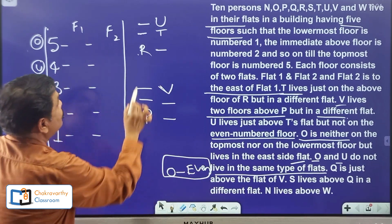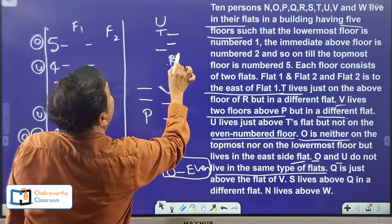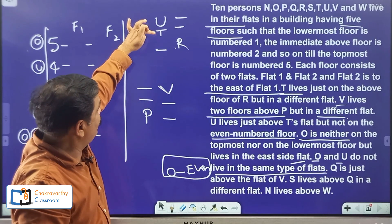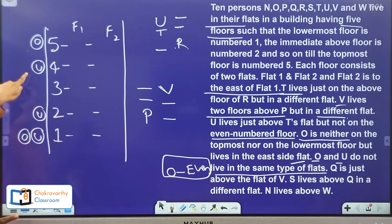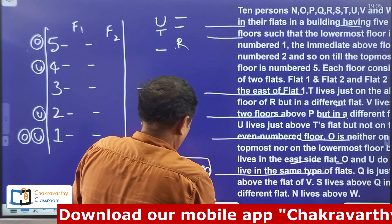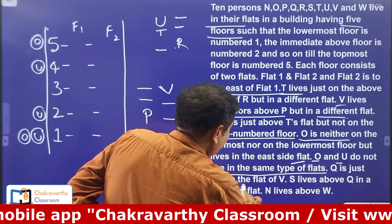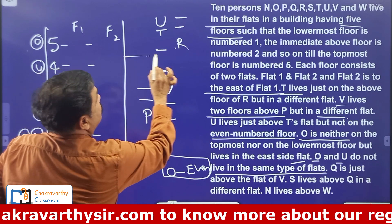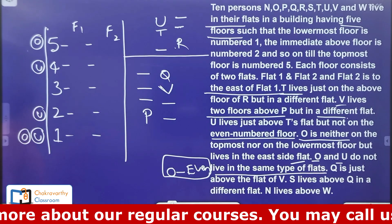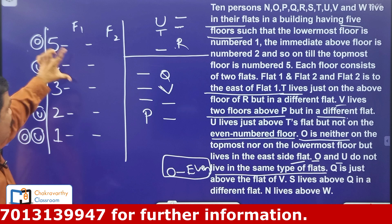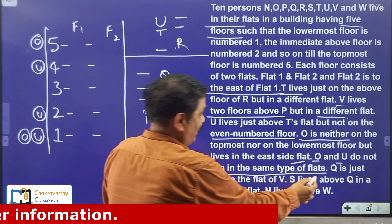Now we got the idea. U can be on the fifth floor or on the third floor. U, T — one floor, or U, T — one floor. Go for the next information: Q is just above the flat of V. Q is just above the flat, so here is Q, parallel to S. I am making it like U. How many floors have I covered? 1, 2, 3, 4 floors covered. If I get one more floor here, automatically I can bring this information onto the final chart.